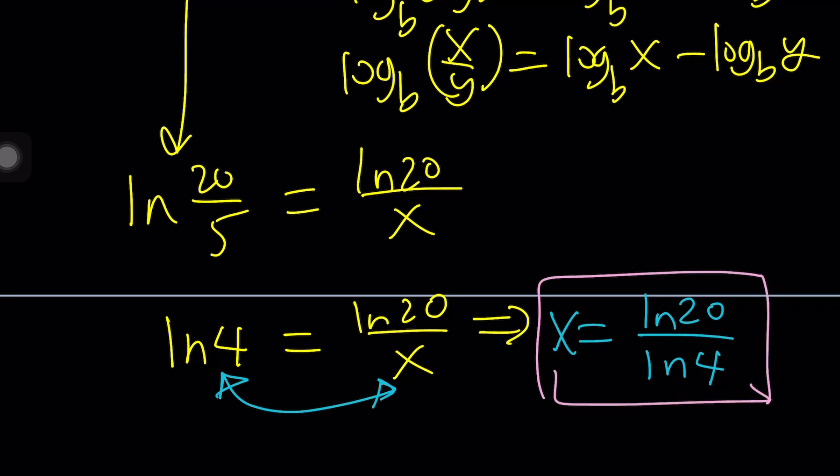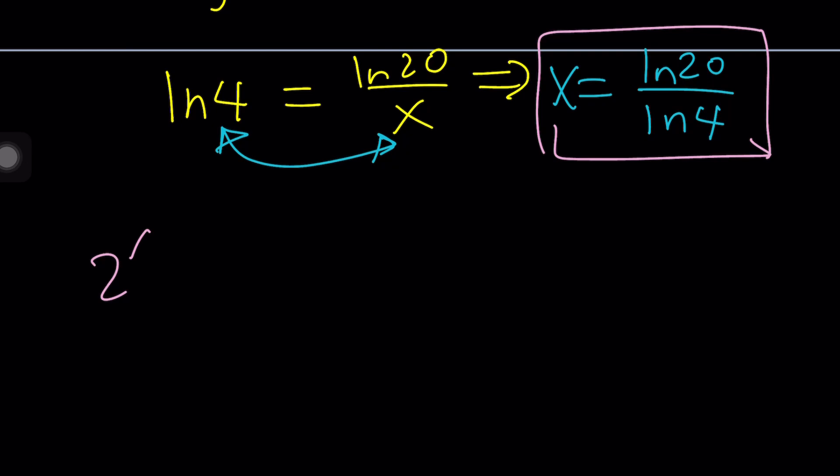Great. So that's x, logarithmically, numerically, that is the value, but guess what? We're not supposed to find x, we're supposed to find 2 to the power of x. What am I going to do? I'll do 2 to the power of that. Let's do it. 2 to the power of x is equal to 2 to the power of ln 20 over ln 4.